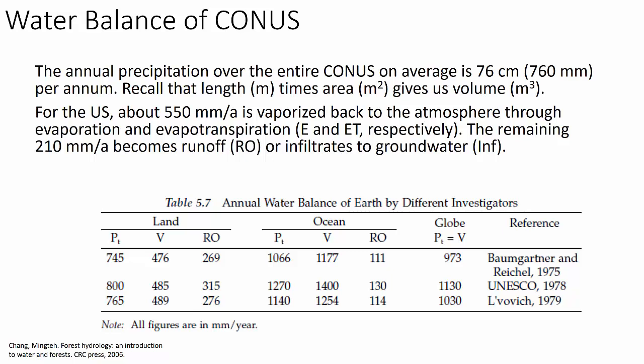On a global basis, the annual water balance varies by investigator based on assumptions. Roughly, precipitation ranges between 745 and 800 millimeters per year, evaporation between 475 and 490 millimeters per year, and runoff between 200 and 315 millimeters per year. These vary dramatically by location. Global Pt equals V globally — that number is 973 millimeters on average according to Baumgartner, and 1,130 according to UNESCO — so it's roughly over a meter per year.